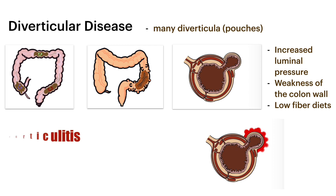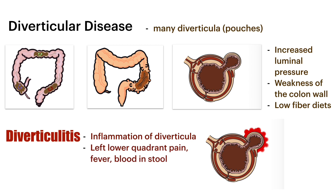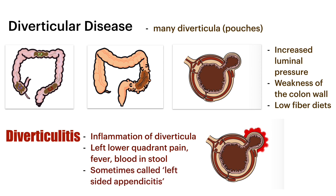What is the first complication of diverticular disease? What happens when one of these pouches becomes inflamed? You get something called diverticulitis — an inflammation of one of these diverticula. They get inflamed and cause symptoms such as left lower quadrant pain, fever, and blood in the stool.